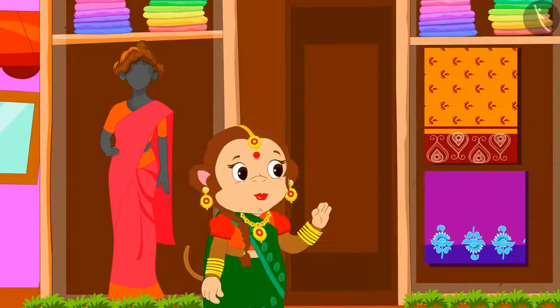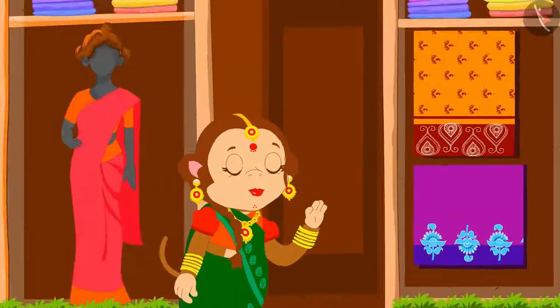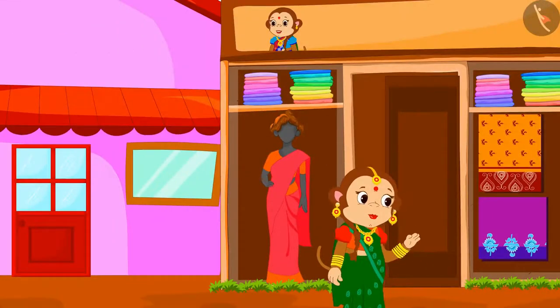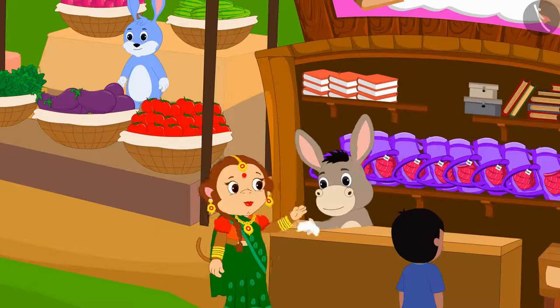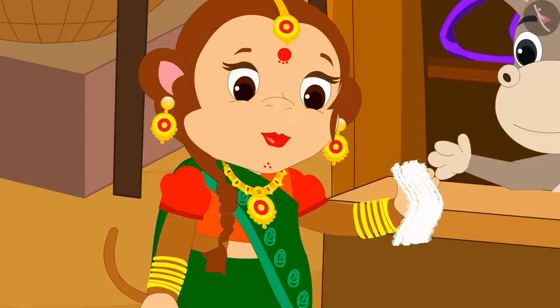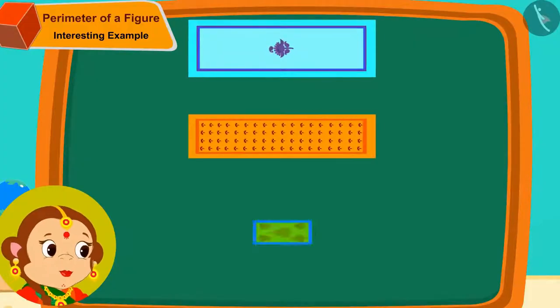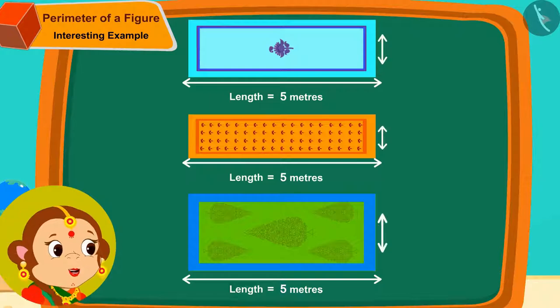Banno has started selling designer bedsheets along with sarees. Banno thought, why don't I put beautiful laces on the edges of these sheets? So, she bought a 14 meters long lace from the market. All the sheets I have are 5 meters in length, but they are of different widths.